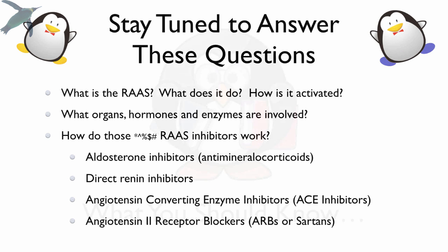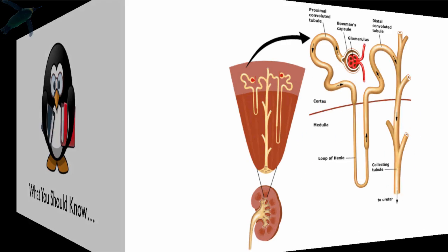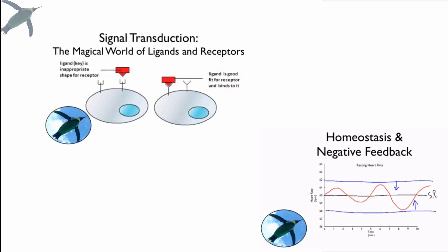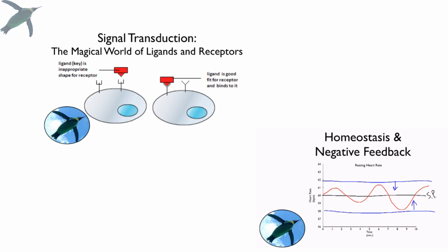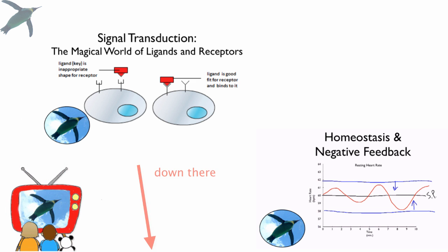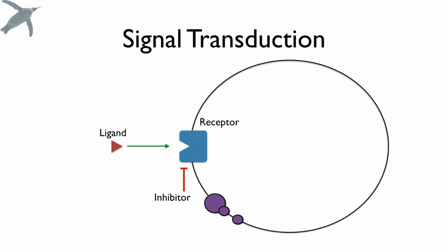What you should know already: some basic anatomy and physiology of the kidney and the nephron in particular, as well as homeostasis, negative feedback loops, and the world of signal transduction. I will put links to those videos below. Just to make sure we're all on the same page, we have the terms ligand and receptor. The ligand is the thing that binds.